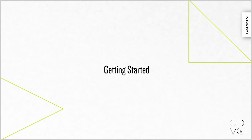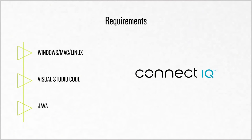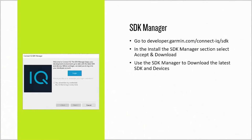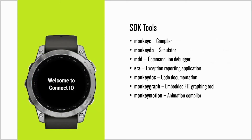Now let's take a look at how a developer can get started creating ConnectIQ apps. The three main requirements are a Windows, Mac, or Ubuntu Linux machine, Visual Studio Code, and Java Runtime version 1.8 or higher. Go to the Garmin developer site at developer.garmin.com/connectiq/SDK to download and install the SDK Manager, then log in with your Garmin Connect credentials. You can use the SDK Manager to download the latest SDK and devices. The SDK includes several tools, including the Monkey C compiler and product simulator, the code documentation tool, the command line debugger, exception reporting tool, and more.